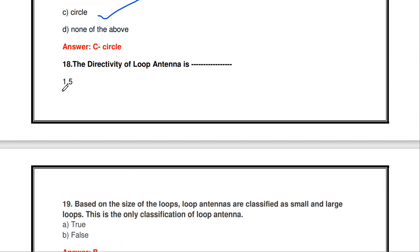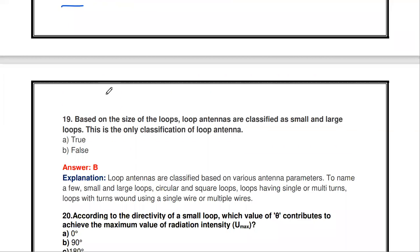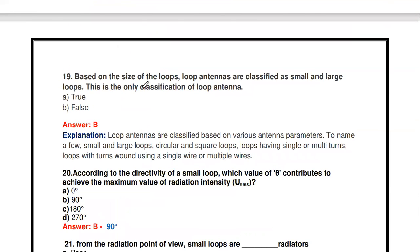The directivity of the loop antenna is 1.5. Remember this constant value for the directivity of the loop antenna.